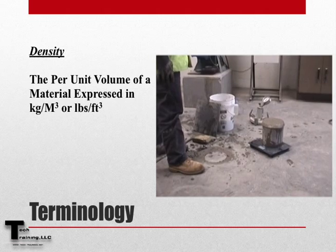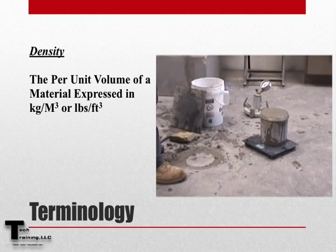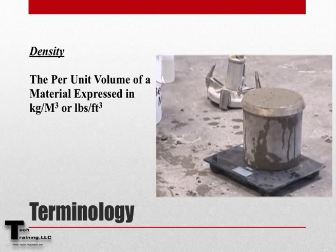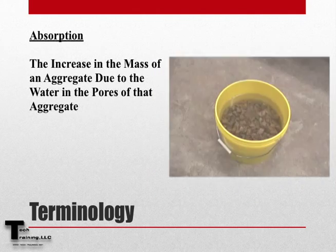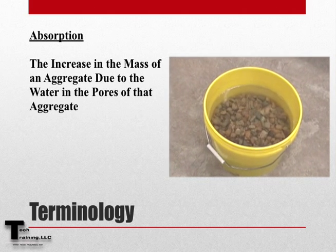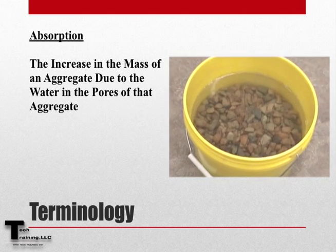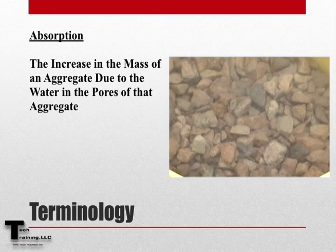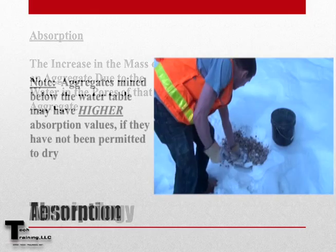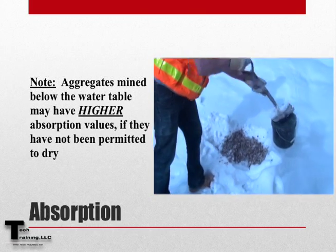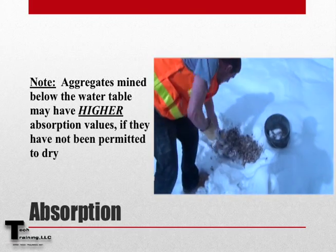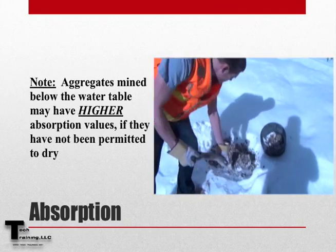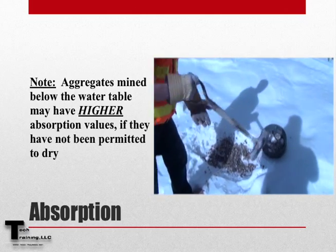Density is the per unit volume of a material expressed in either kilograms per cubic meter or pounds per cubic foot. Absorption is the increase in mass of an aggregate due to the water that has been absorbed into the pores of that aggregate. It is good to note that aggregates which have been mined from below the water table may have higher absorption values if they are not permitted to dry.